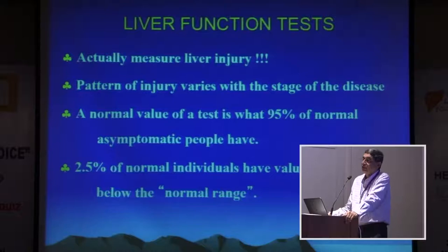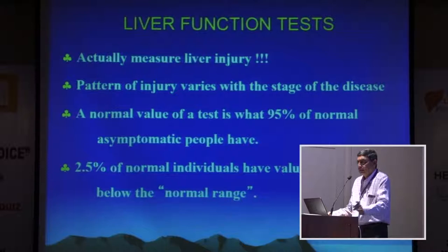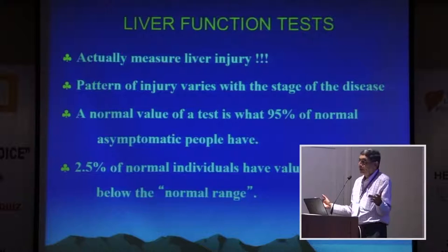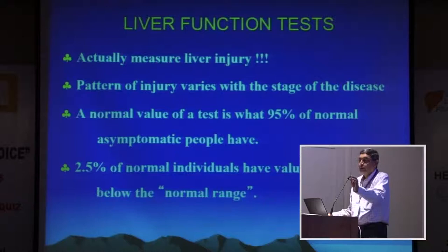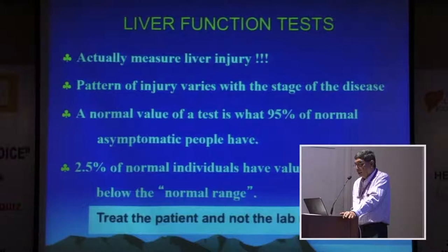The term 'liver function test' is actually a misnomer. We are actually measuring liver injury — it's not liver function. The pattern of injury varies with the stage of the disease, and this is an important point to remember. A normal value in a test is what 95% of normal asymptomatic people have, so just because one test is abnormal, you don't need to be overly concerned. There is 5% of the population whose values fall outside the normal range given in a lab, and 2.5% of normal individuals have values above or below this range.